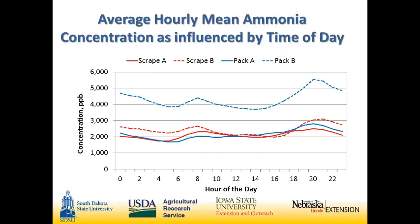One of our advisory council members was really curious about how air quality changes based on time of day. We took all our concentration data and grouped it by hour of the day from midnight to noon back to midnight. With ammonia concentrations, we see two peaks happening between 7 and 9 a.m. and then around 8 to 9 in the evening. What's happening at those times of day? We have cattle being fed, more cattle movement — whenever cattle get up, you know what the first thing they do is. We also see a slight increase over the course of the day, so temperature influence is coming into play as well as animals being more active through the day.